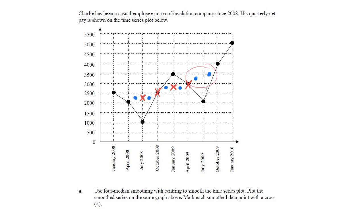The final pair: halfway between them horizontally is on this line and halfway between them vertically is about there, so that's where my cross goes. Now all that's left is to join them up — I just draw a line between the crosses like that.